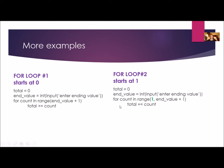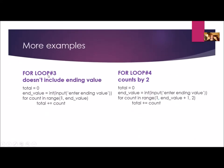Loop two has a starting value of one and an ending value of end_value plus one. So if I had five again, I'd go one, two, three, four, five. Loop three doesn't include the ending value — so if my ending value is five, I start at one and go one, two, three, four.